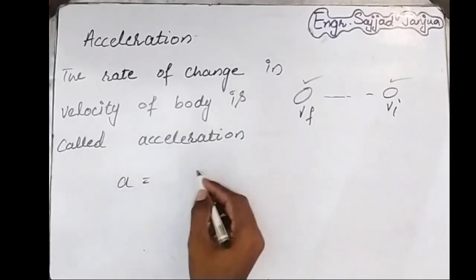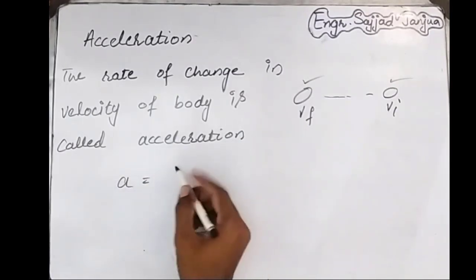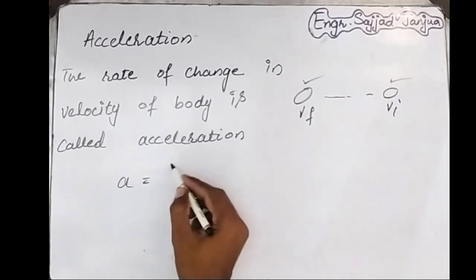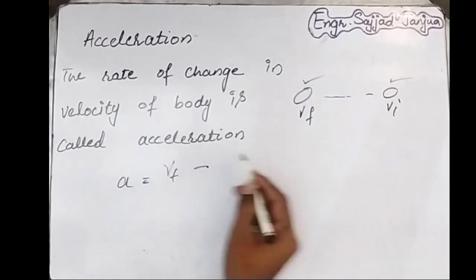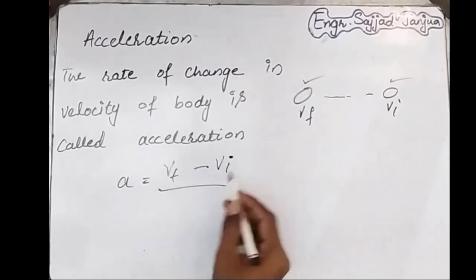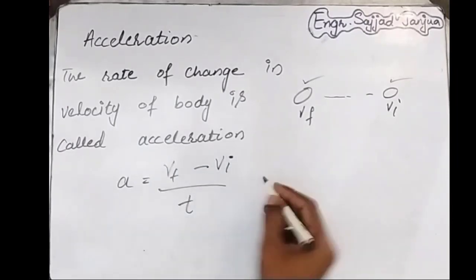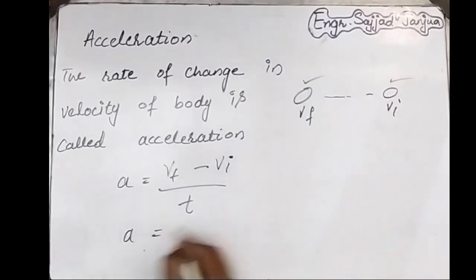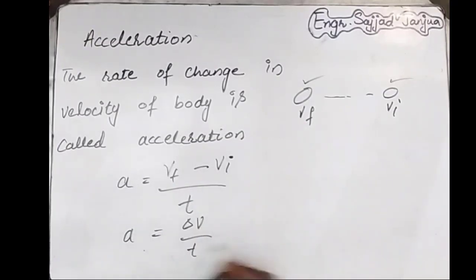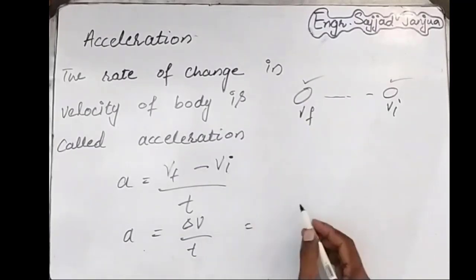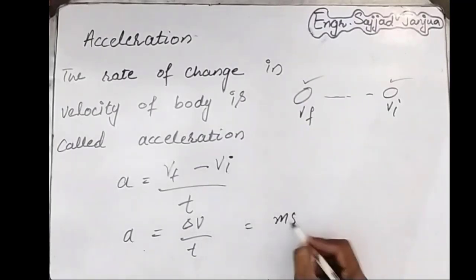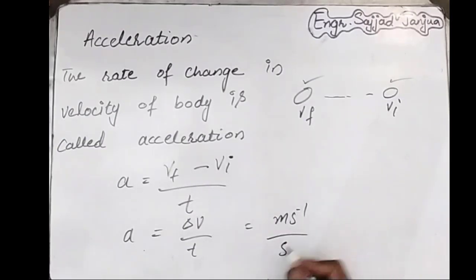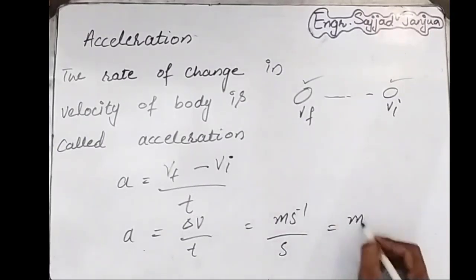Acceleration is equal to (vf minus vi) over t. We can also write it as acceleration equals Δv over t. The unit of velocity is meter per second, so acceleration will be equal to meter per second squared.